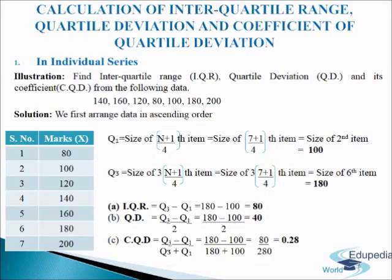We need to arrange the series into ascending or descending order, then apply the respective formula to find IQR, QD and CQD. The data values are: 60, 120, 80, 100, 180 and 200. So let's start with the solution. First we arrange data in ascending order. For that we will make a table of two columns. In the first column we will write serial numbers and in the second column we will write marks, denoted by letter x.